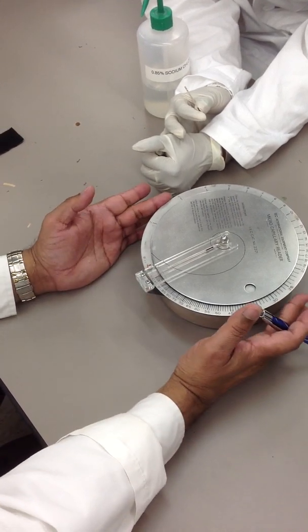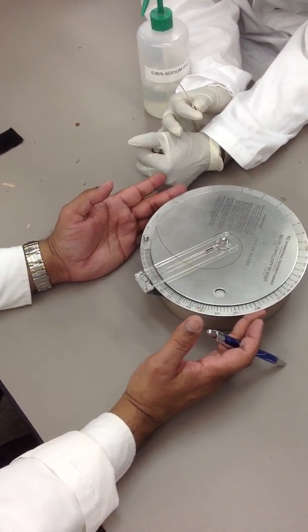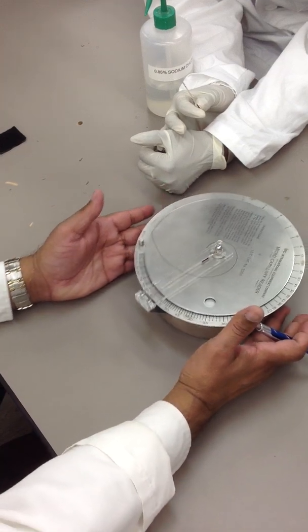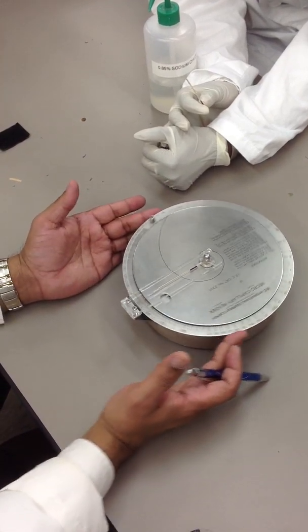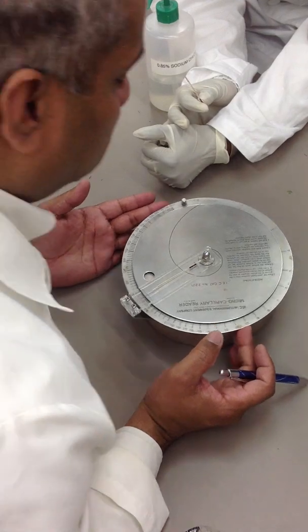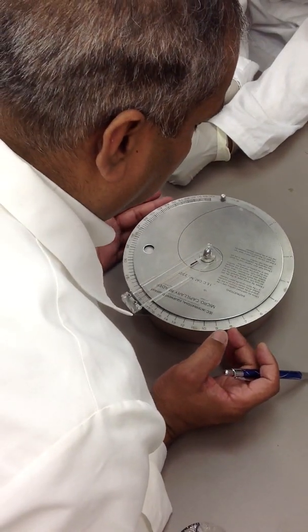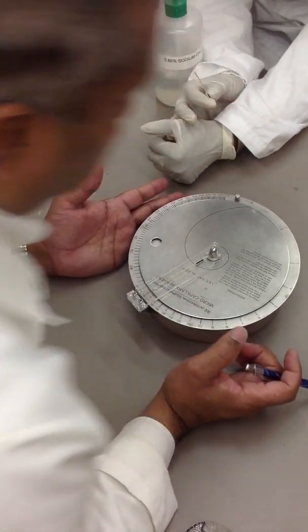Then, all you have to do now is rotate the whole plate. The bottom plate and the top plate rotates together. Okay? Until it crosses now the cell-plasma interface.